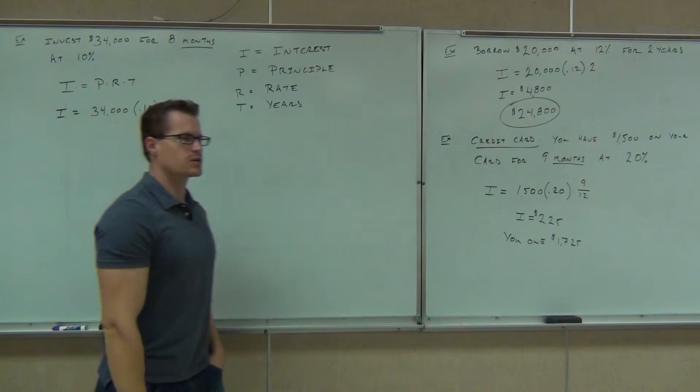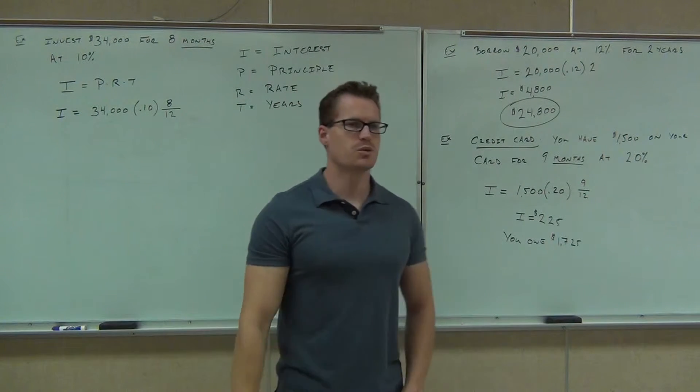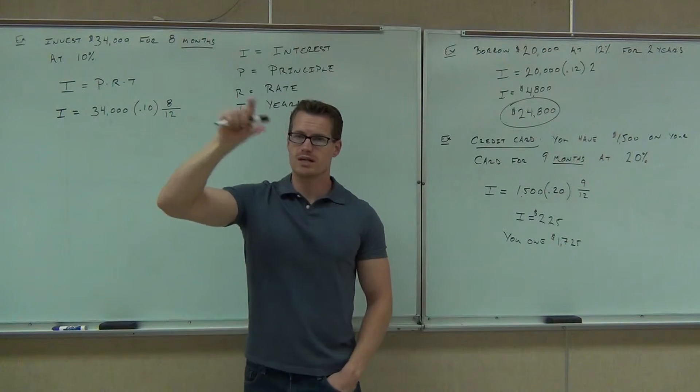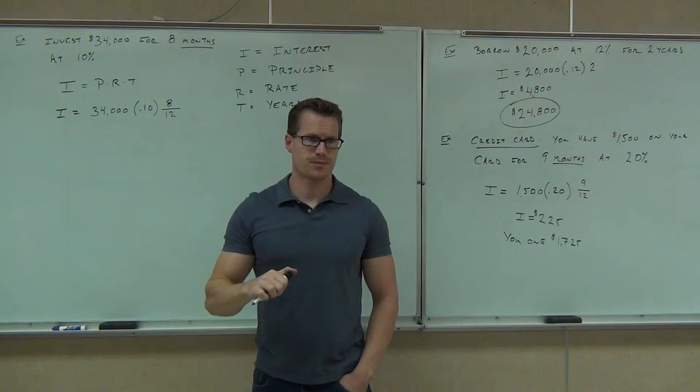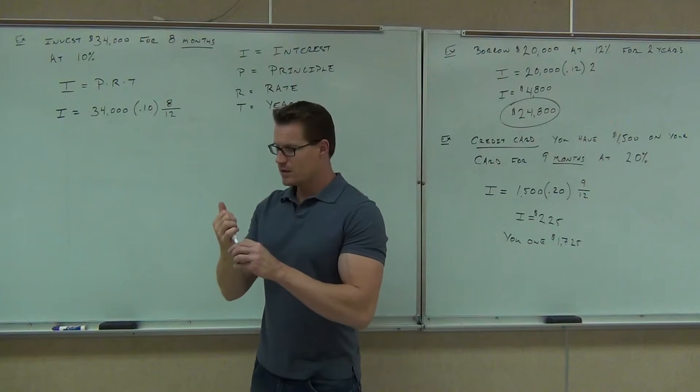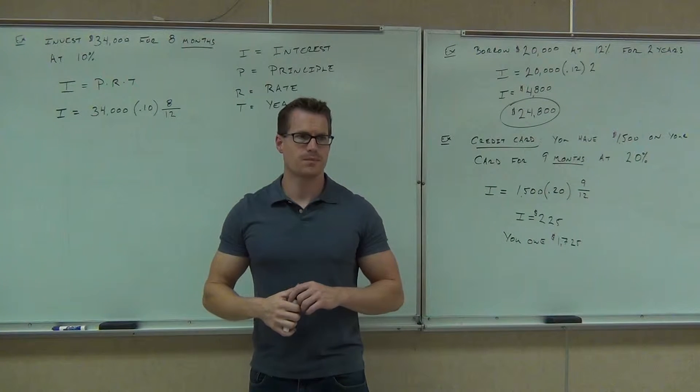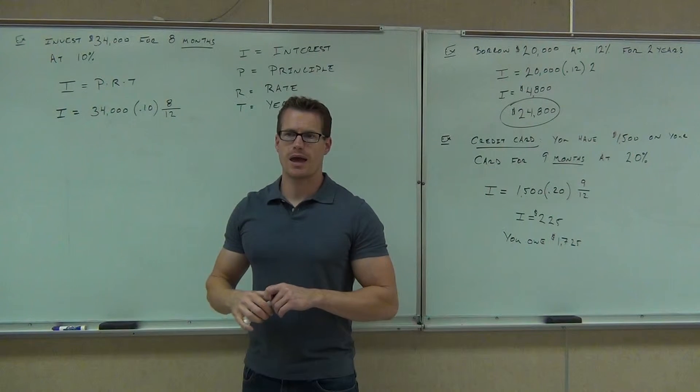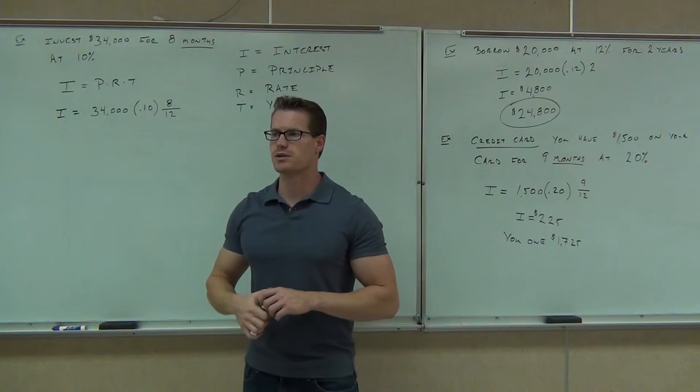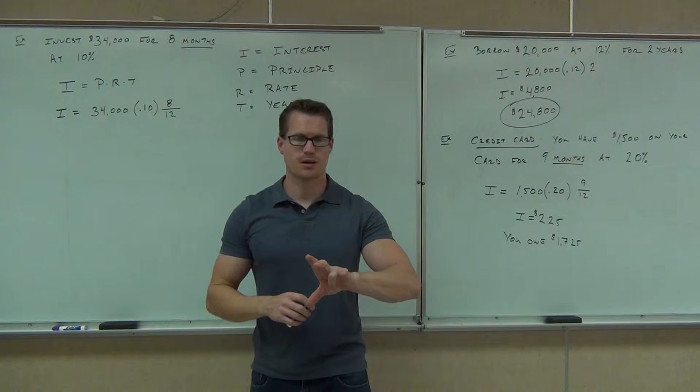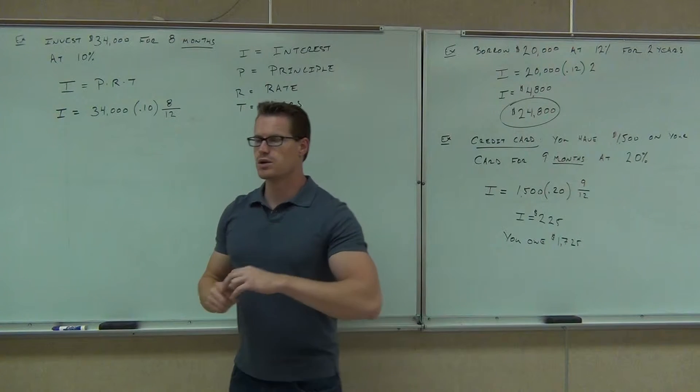So here's how to do this. Eight-twelfths. Here's how to do this without rounding. What you do is you punch in this number first, eight-twelfths first. Then you work your way backwards. So do 8 divided by 12, press enter. Then multiply by 0.1, press enter. And then multiply by 34,000, press enter. That will make it so that you don't round it all until the very last step. Did you get it?